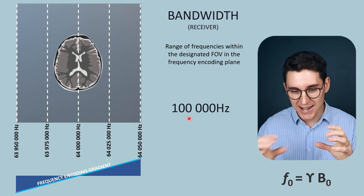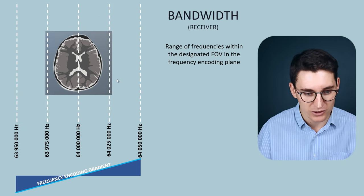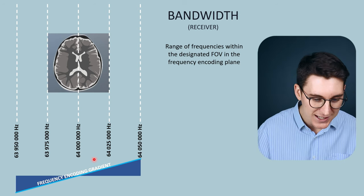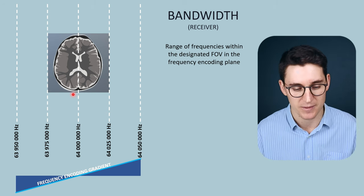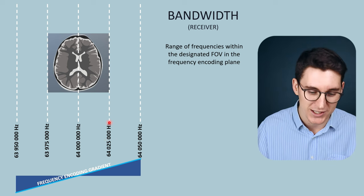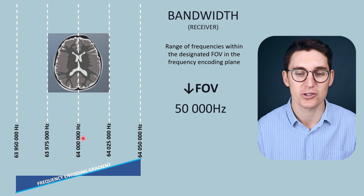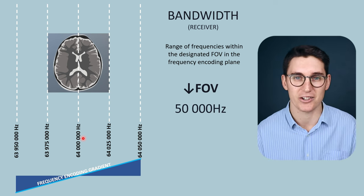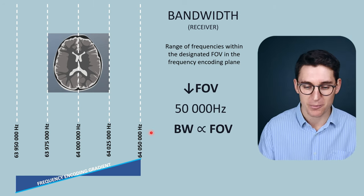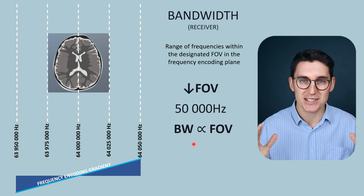We actually select the bandwidth we want and the MRI machine calculates the gradient needed to generate it. If we reduce the field of view from 50 cm to 25 cm, the range of frequencies from the center to the edge of the slice is now only 25,000 Hz, so our bandwidth is now only 50,000 Hz. Reducing the field of view has reduced our bandwidth from 100,000 Hz to 50,000 Hz. So bandwidth is proportional to field of view — as field of view increases, bandwidth increases, and as field of view decreases, bandwidth decreases.